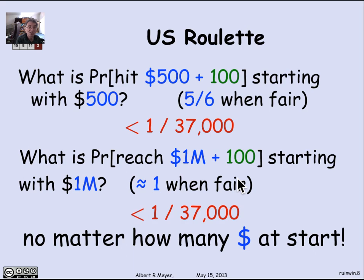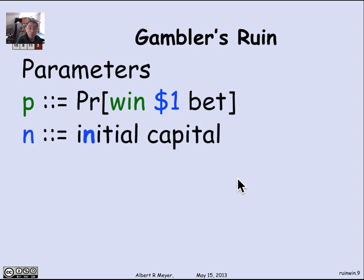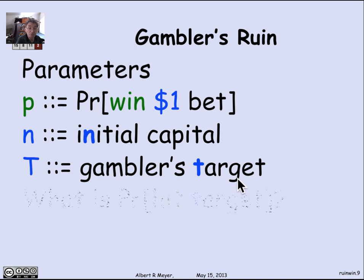So the way we abstract the gambler's ruin problem is there are three parameters. One is P, the probability that you will win a $1 bet. If P > 1/2, the game is biased in your favor; if P < 1/2, it's biased against you; and if P = 1/2, it's a fair game per bet. The other parameters are N, the initial capital, and T, your target, which is supposed to be greater than or equal to N. You win when you hit T, or you lose when your current capital reaches 0.